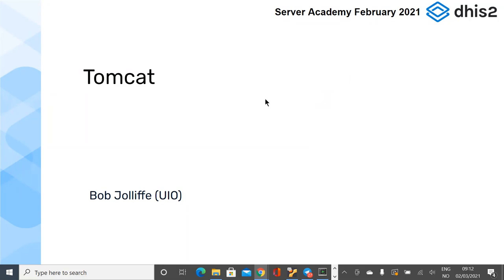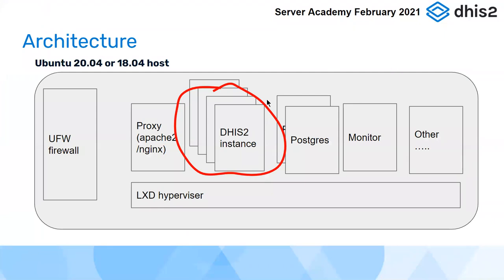The Tomcat container is where it fits in the architecture. The three main pieces for running DHIS2 are your database, which we looked at last week, your DHIS2 instance — basically what's running inside a Tomcat container — and then the reverse proxy running at the front of all of that. We're not really going to look at the reverse proxy until tomorrow.